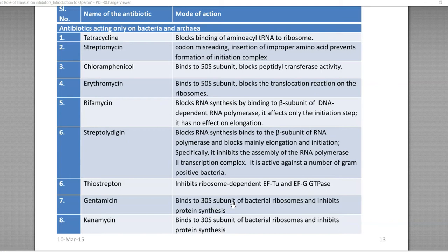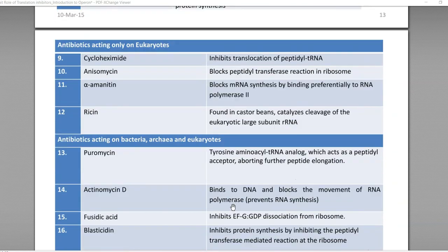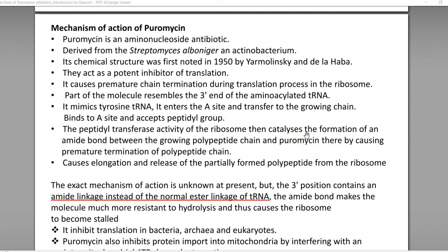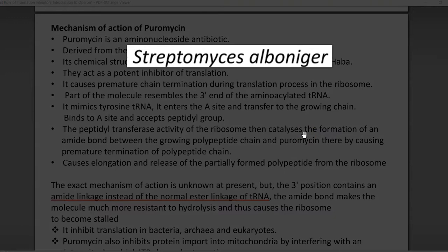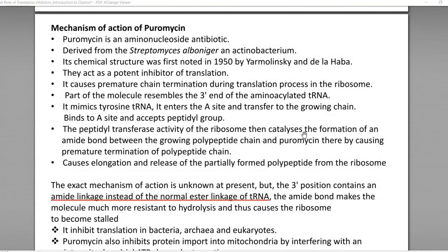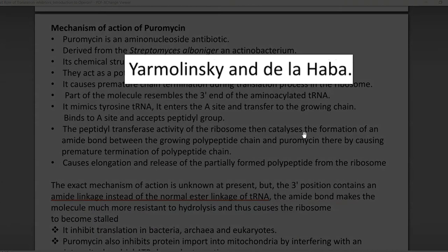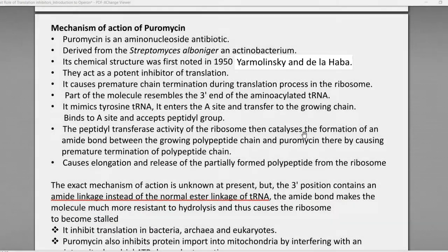The three antibiotics to be studied include streptomycin, chloramphenicol, and puromycin, which act on bacteria, archaea, and even certain eukaryotic organisms. First, we look at the mechanism of action of puromycin. Puromycin is an aminonucleoside group of antibiotic and is commonly produced from Streptomyces alboniger, an actinobacteria. Its chemical structure was first elucidated in 1950.